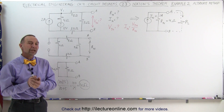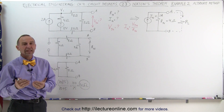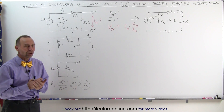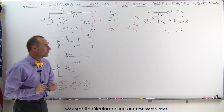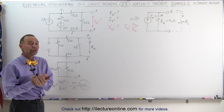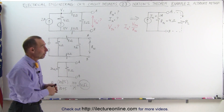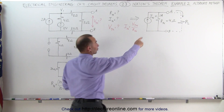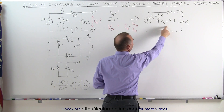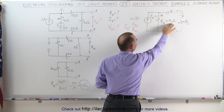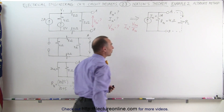Welcome to our lecture online. Here we're going to do the same example that we did in the last video, but we'll do it with a different method. We still are trying to find the equivalent Norton circuit by finding the Norton current and the Norton resistance, and from the previous video we knew that the Norton resistance was going to be 4 ohms and the Norton current is 1 amp.